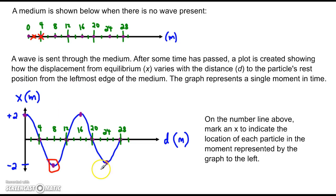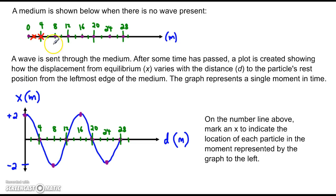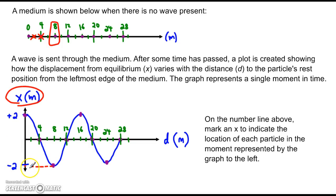The next particle is the one whose rest position equals eight meters. So d, the rest position, is eight for this particle. Let's find it — eight meters, there's the rest position of eight. How is it displaced? The y-value, the displacement, is negative two. So this particle, located at eight meters, is not still there — it's been pushed two meters to the left.